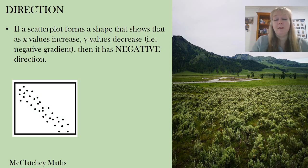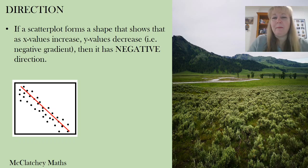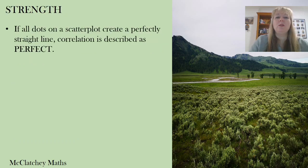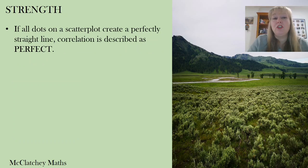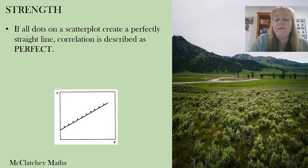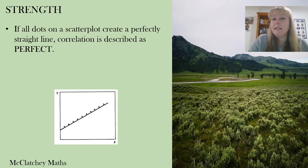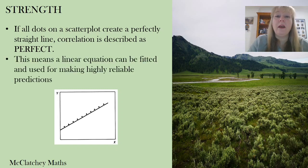So to recap: form is whether it's linear or nonlinear; direction is positive or negative. Then we have strength, which is the one that seems to trip people up the most. Strength is all about where the dots are in relation to the line of best fit. If all our dots form pretty much a perfectly straight line, we describe that correlation as perfect — that would give us a highly predictable model for making predictions.